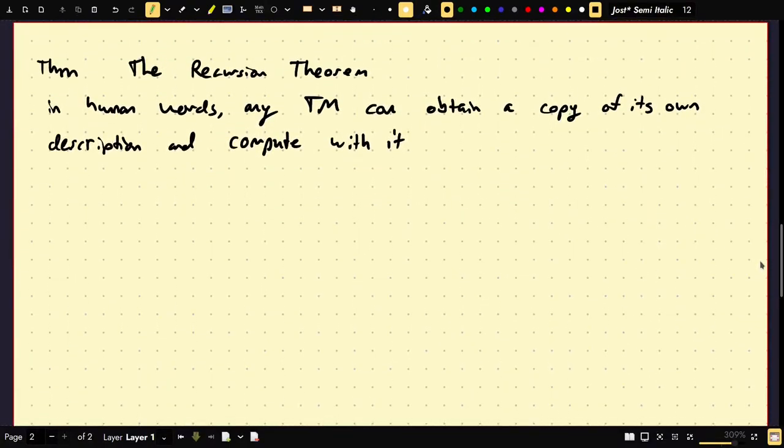It can say, I obtain a copy, using the recursion theorem, of my own encoding. Then I check if I had 17 states or not, or whatever. Something like this is possible.